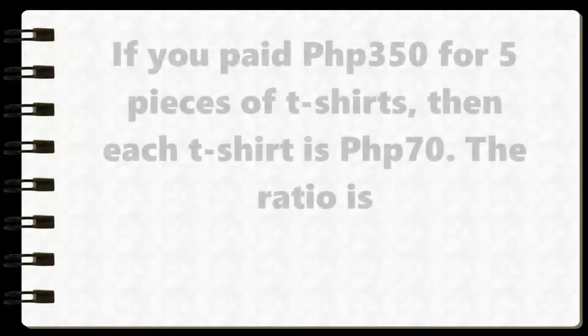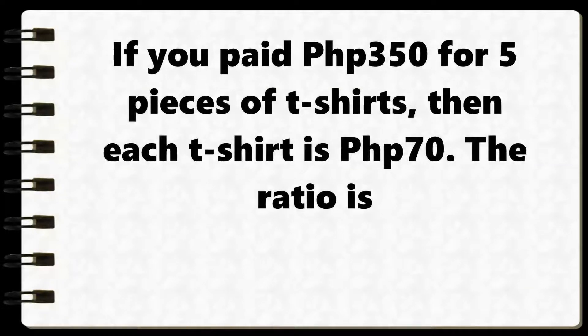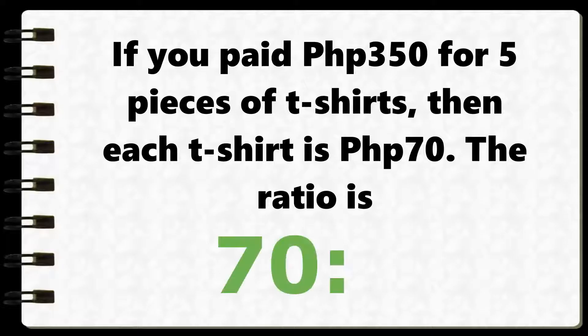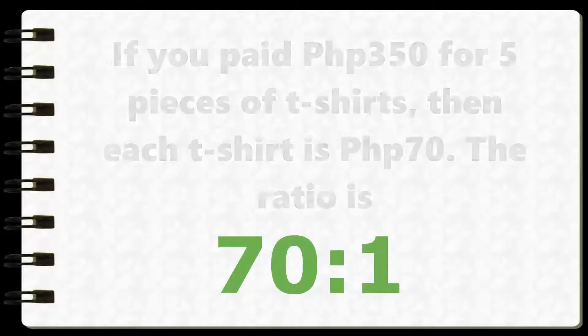Product prices: if you paid around 350 pesos for 5 pieces of t-shirts, then each t-shirt is 70 pesos. The ratio is 70 to 1.